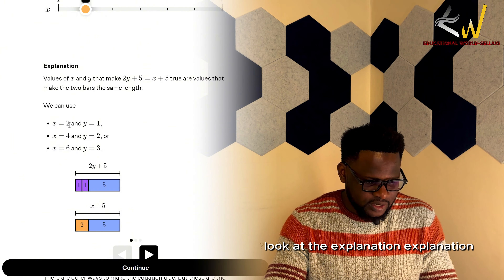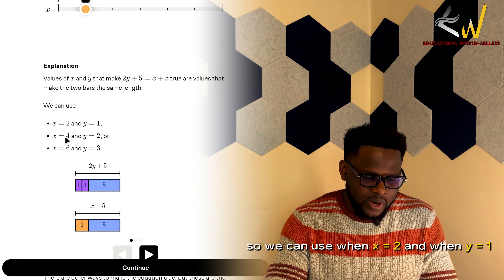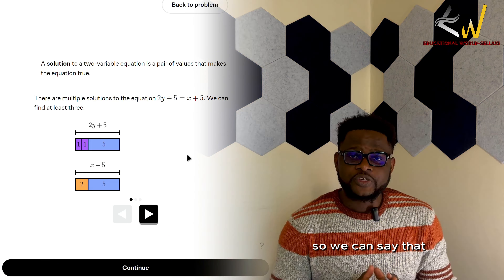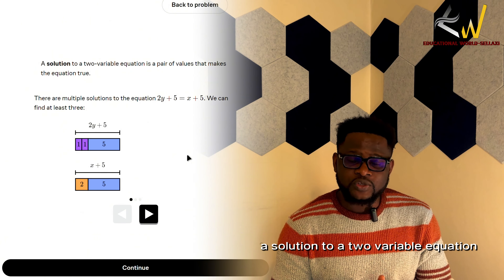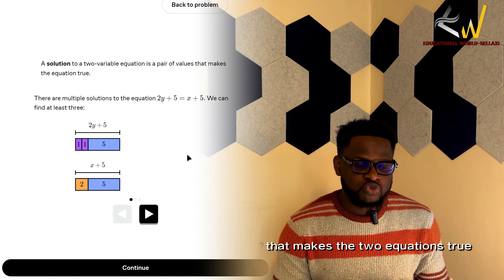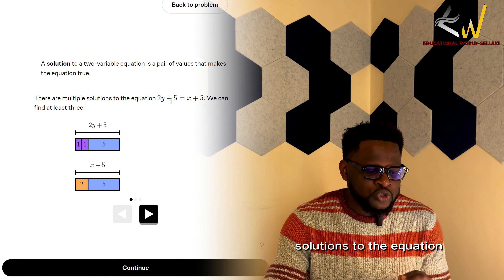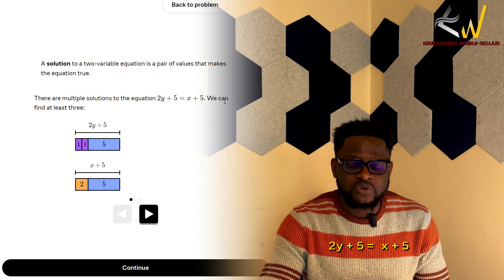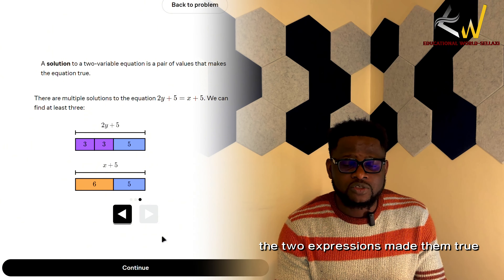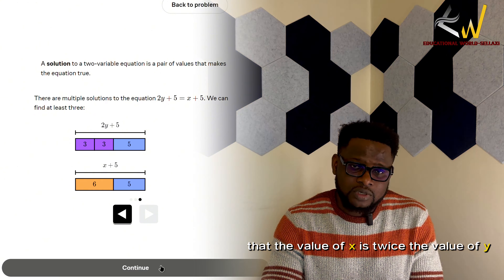Looking at the explanation: when x is 2 and y is 1, it's not equal; but when x is 4 and y is 2, it is equal. We can say that a solution to a two-variable equation is a pair of values that makes the equation true. There are multiple solutions to 2y plus 5 equals x plus 5, provided that the value of x is twice the value of y.